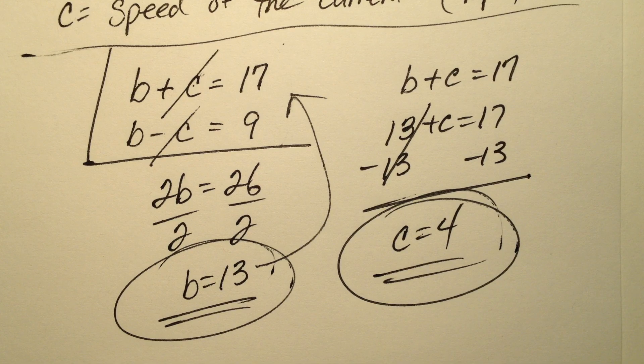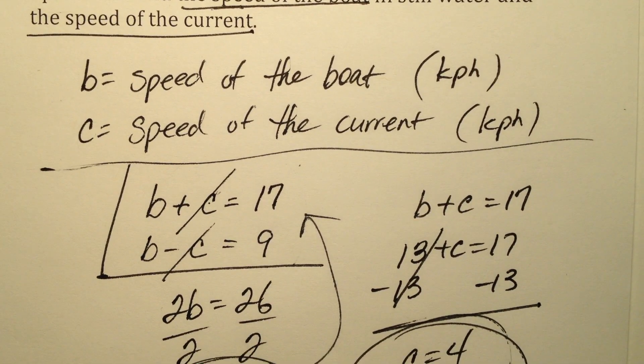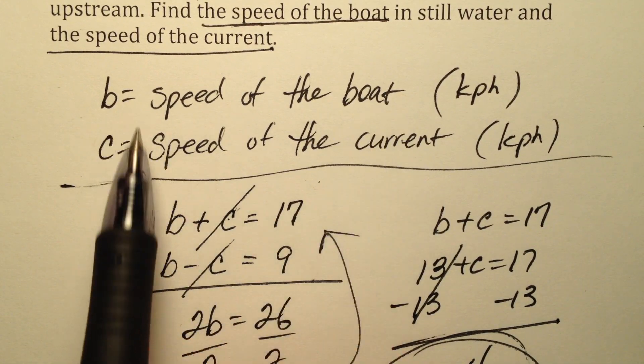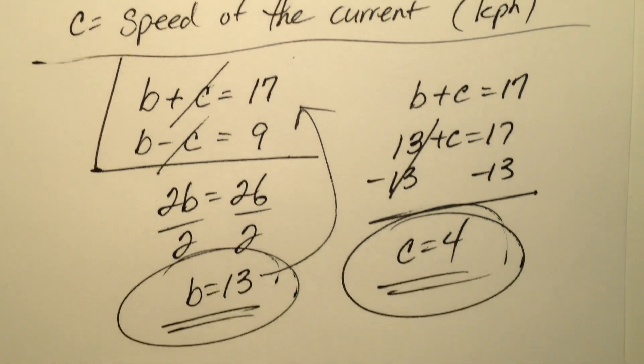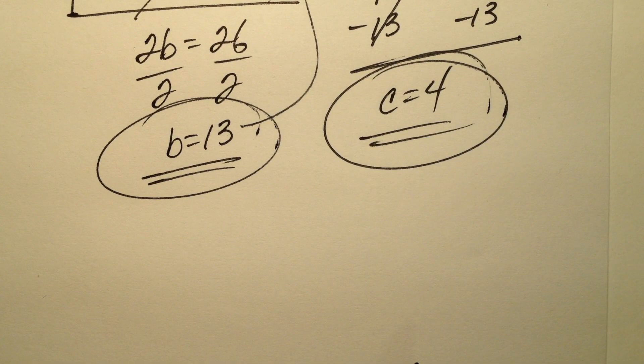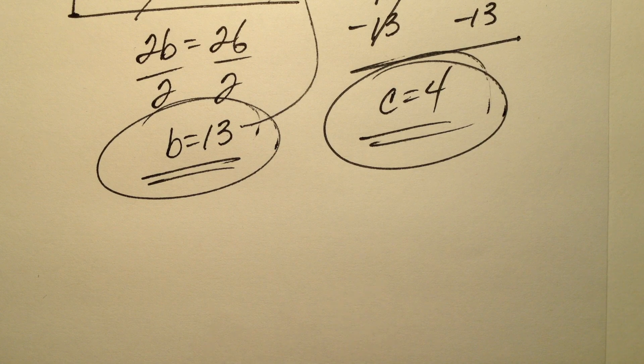So now, my variable definition said the speed of the boat was b and the speed of the current was c. So I'm going to go ahead and write my sentence because I have values now for both b and c.